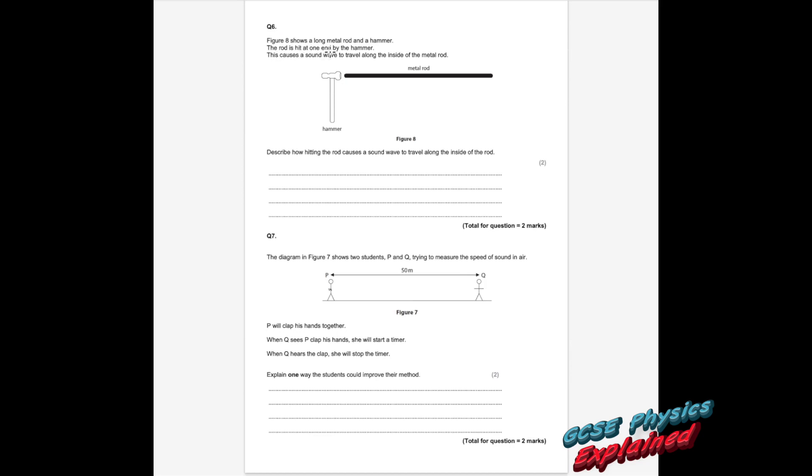Question 6. Figure 8 shows a long metal rod and a hammer. The rod is hit at one end by the hammer, causing a sound wave to travel along the inside of the metal rod. Describe how hitting the rod causes a sound wave to travel along the inside of the rod. Well, inside the rod is all little particles, and what happens is the particles start to vibrate more. As they start to vibrate more, they collide into the particle that's next to them and then pass the energy on through vibrations. It's worth two marks, so the particles gain energy and vibrate more and pass energy onto the next particle.